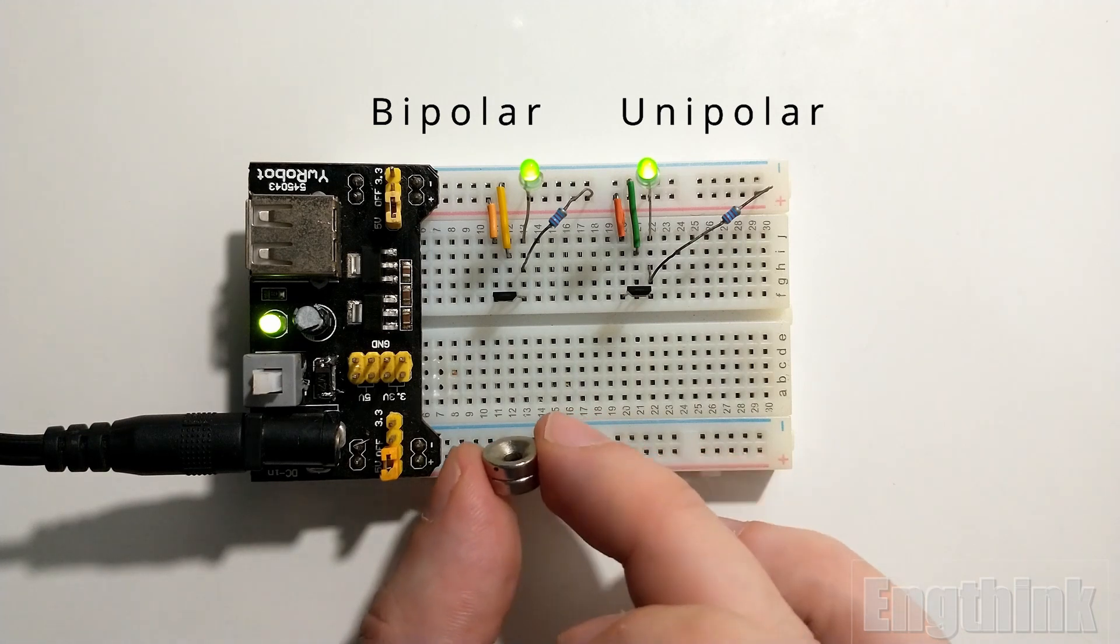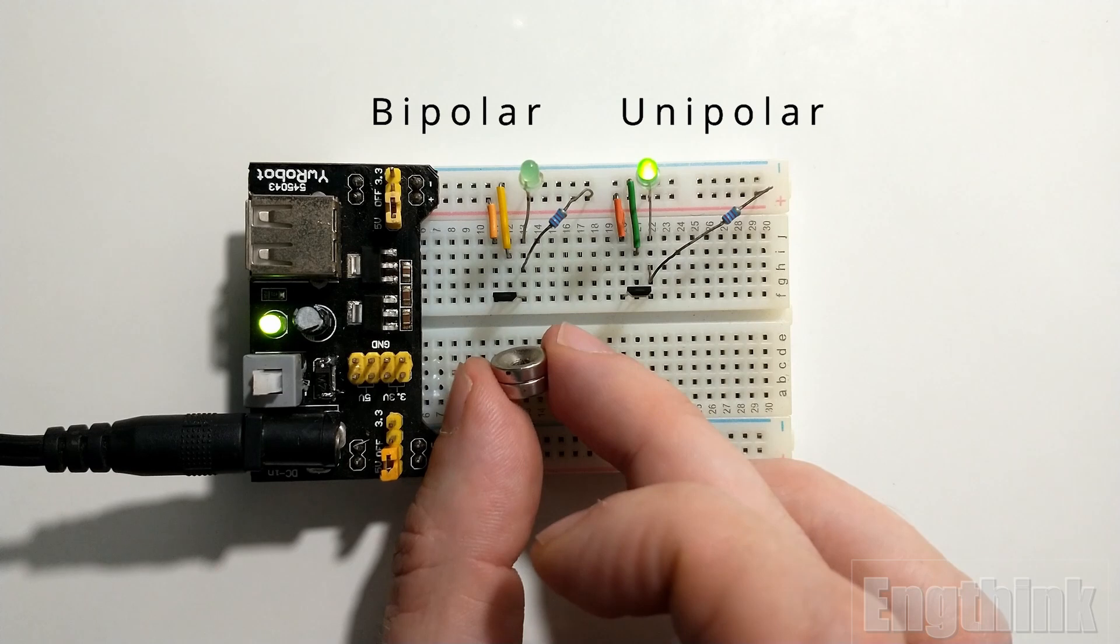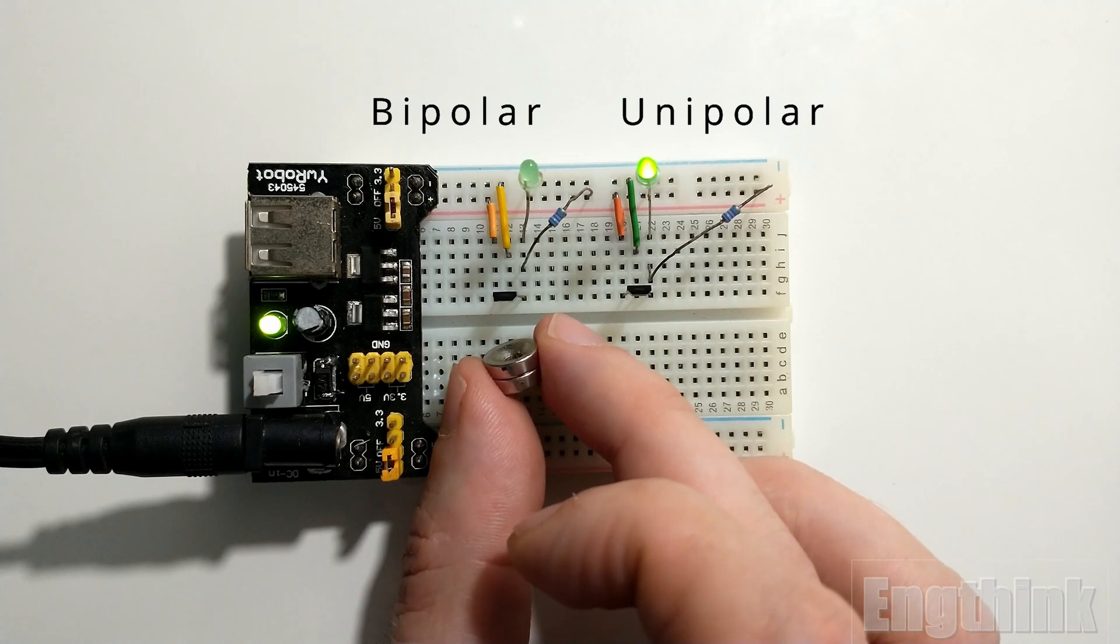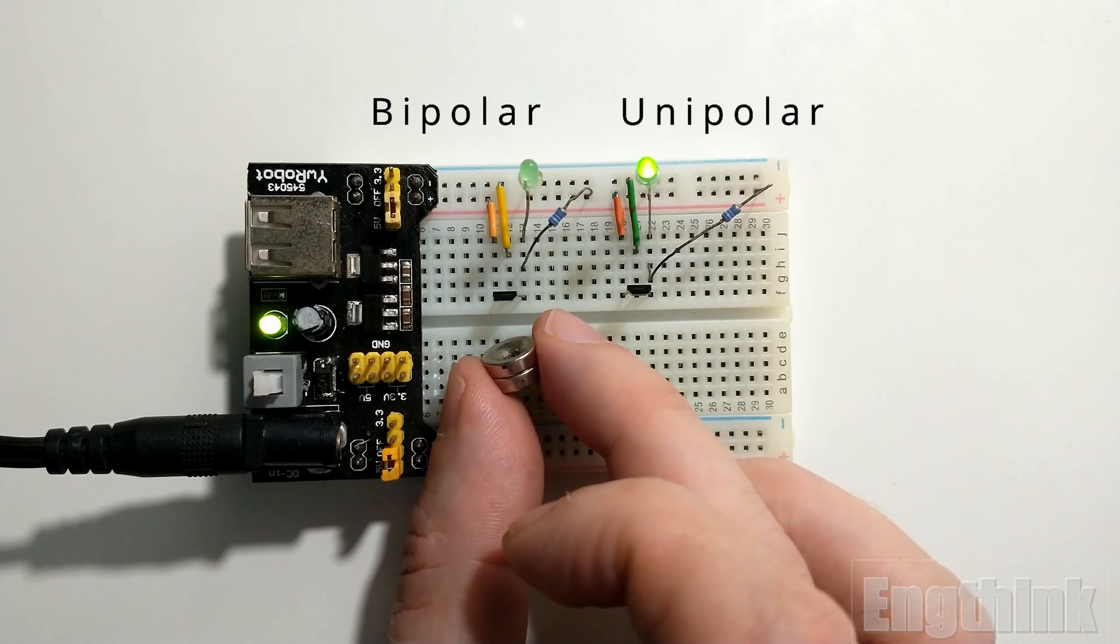As you can see, when the sensor detects the magnetic field of the south pole, we have a transition in the output turning off the LED—the same behavior of the unipolar mode.